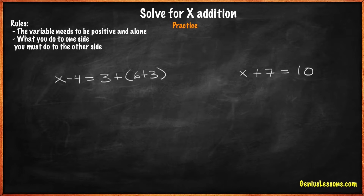Practice solution. x minus 4 equals 3 plus 6 plus 3. Our goal is to find the value of x. As we can see, we have two sides: the side on the left and the side on the right. We need to have the variable x alone on one side.